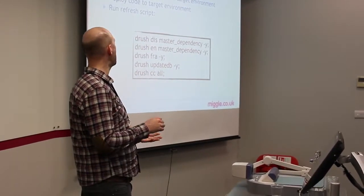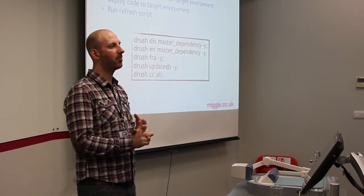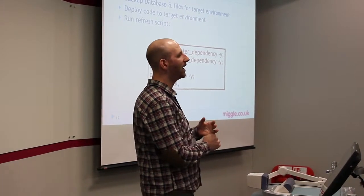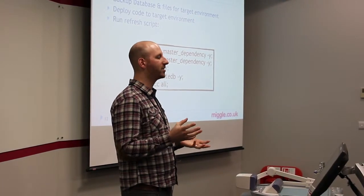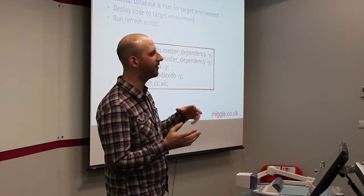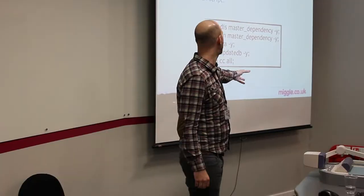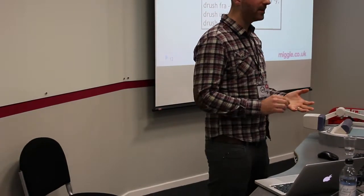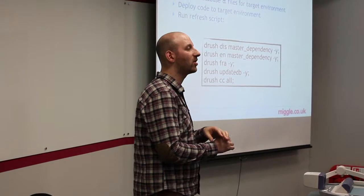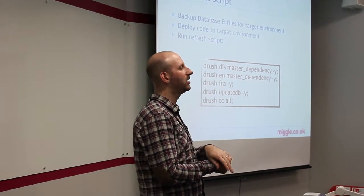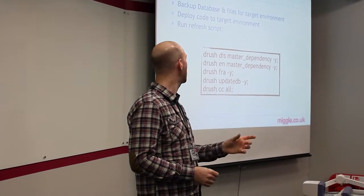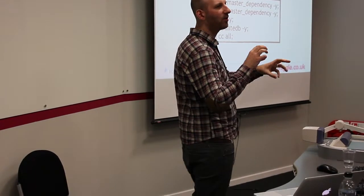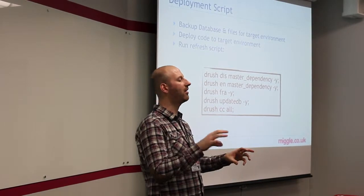In addition to this, you may have per-environment variables. A good example of that is Amazon S3 — you may have a bucket per environment that you use, pointing that bucket to whatever you need it to be. There are alternate ways of doing that; in settings.php, for example, you can hard code certain variable settings. We tend to use multiple settings.php files, one per environment.